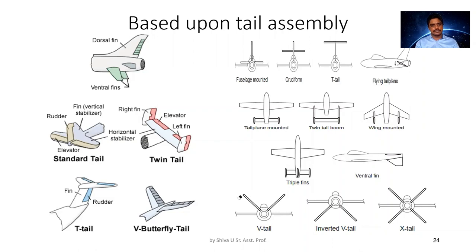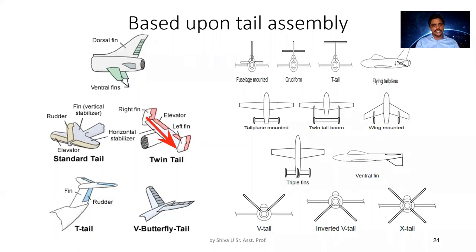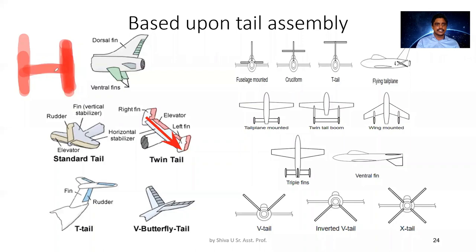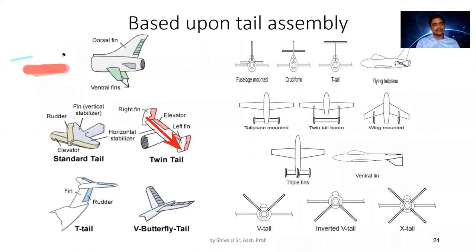In the twin tail configuration, there are two vertical stabilizers — one at each end of the horizontal stabilizer rather than centrally mounted. If those vertical stabilizers are extended downwards, it can also be called an H-type or H-tail configuration.